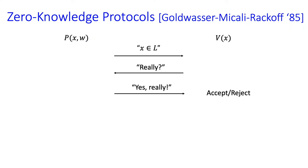The object we study in this work is closely related to the notion of a zero-knowledge protocol introduced by Goldwasser, Micali, and Rakoff. A zero-knowledge protocol for an NP language L is an interactive protocol between a prover and a verifier, where the prover is trying to convince the verifier that a statement x is true, namely in the language, without revealing any information beyond that fact.